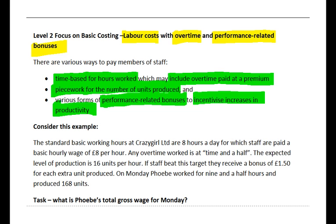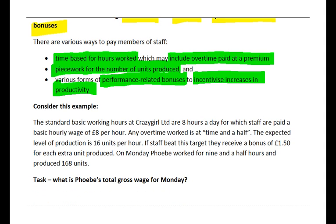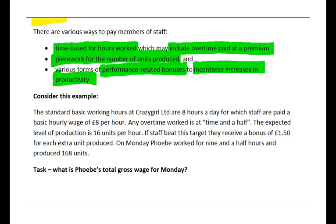It could be that if staff hit a certain target of production, they might earn a certain bonus. For salespeople, commission might be quite a common way of remunerating them - so the more they sell, the more they will earn. Let's have a look at a little example, the sort of thing you might see in an assessment task. The standard basic working hours at Crazy Girl Limited are 8 hours a day, for which staff are paid a basic hourly wage of £8 per hour. Any overtime is worked at time and a half, so they're going to get a premium on top of the £8 per hour. The expected level of production is 16 units per hour.